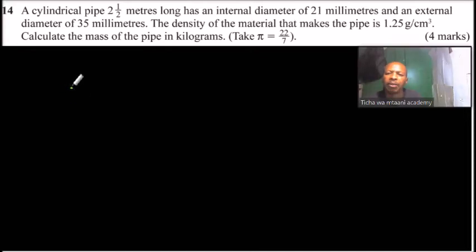Question number 14. A cylindrical pipe 2.5 meters long has an internal diameter of 21 millimeters and an external diameter of 35 millimeters. The density of material that makes the pipe is 1.25 grams per centimeter cube. Calculate the mass of the pipe in kilograms. You take pi to be 22 over 7.